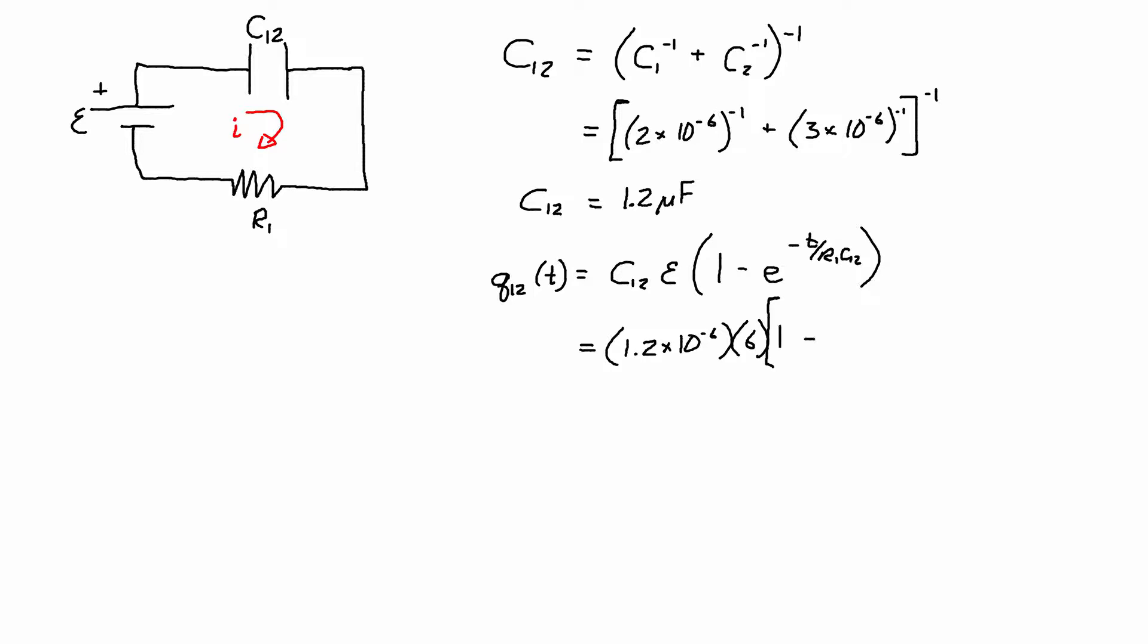Then I have 1 minus E to the negative and I have my time as 70 or 7 times 10 to the negative 5 or 70 times 10 to the negative 6 all over 40 ohms times the equivalent capacitance 1.2 times 10 to the negative 6 farads.